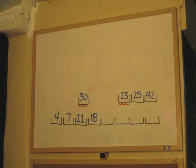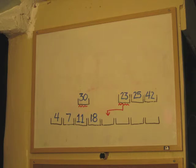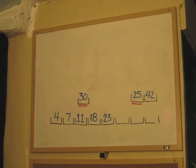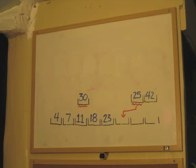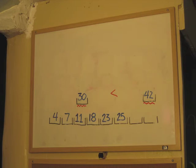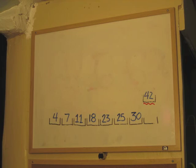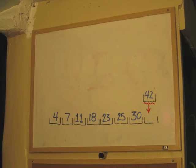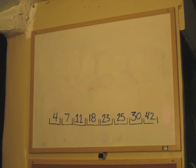Now we compare 30 and 23. 30 is greater than 23, so 23 will take the next spot in our list of eight numbers. Now we compare 30 and 25. 30 is greater than 25, so 25 will be the next number in our list of eight numbers. Finally, we compare 30 and 42. 30 is less than 42, so 30 takes the next spot in our list. 42 is all that's left — it goes into the last spot in our list of eight numbers. So here we have it: our sorted list, thanks to Merge Sort.